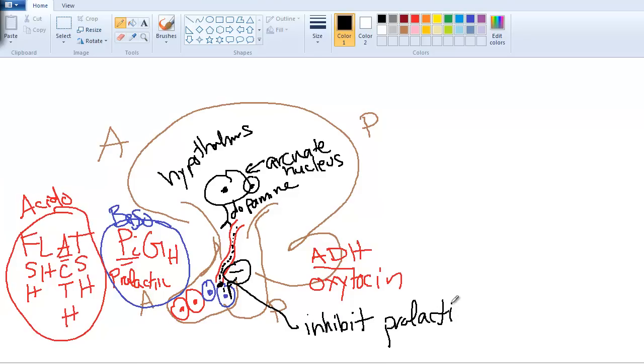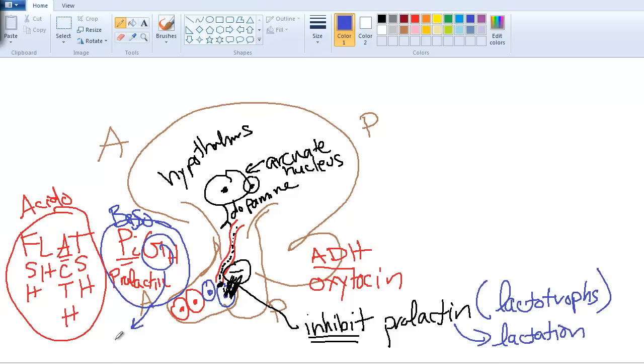prolactin secretion. I'll draw these two solid lines meaning inhibit. Here's a question: what type of cell is prolactin coming from? Prolactin is coming from the lactotrophs because prolactin stimulates lactation. What about growth hormone? That's going to be a somatotroph.